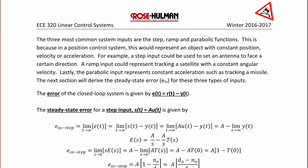The three most common system inputs are the step, ramp, and parabolic functions. This is because in a position control system, this would represent an object with constant position, velocity, or acceleration.